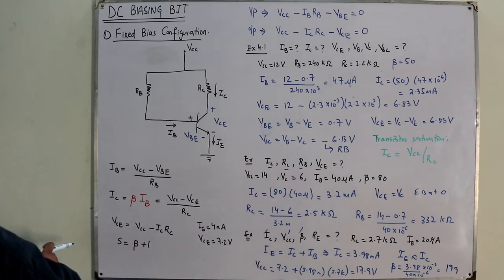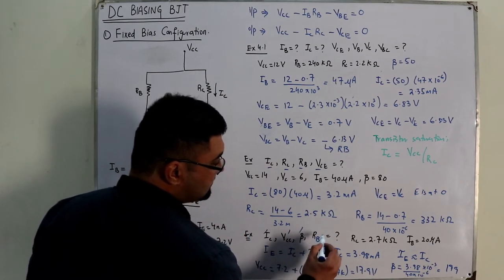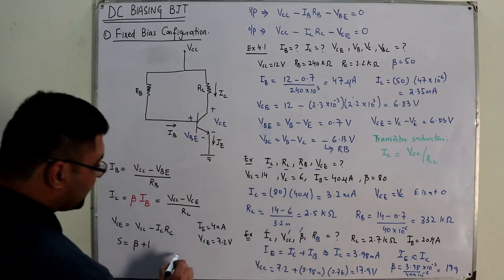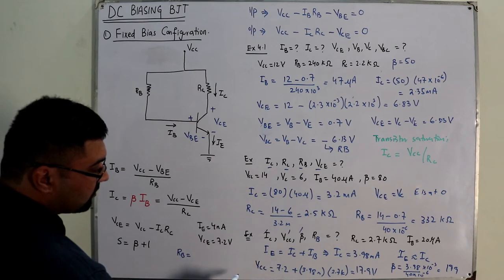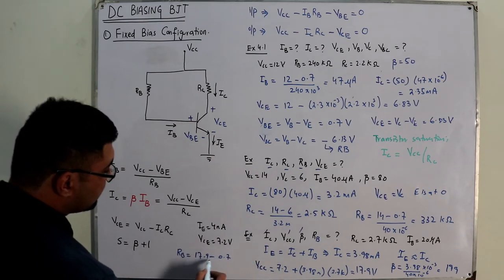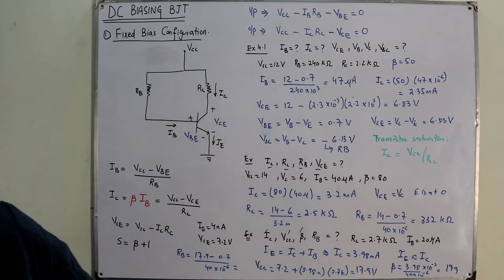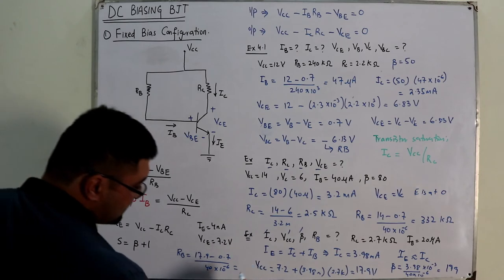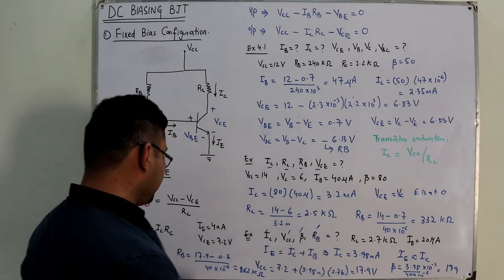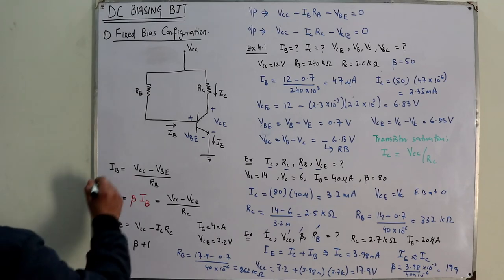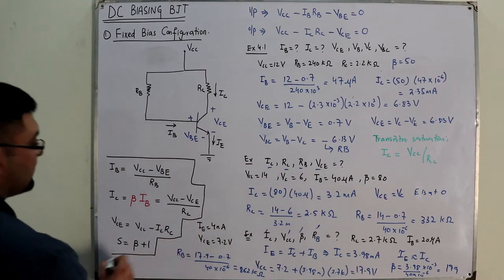Beta equals approximately 199. Note: there is no RE in the fixed bias configuration. What we're solving for is RB. RB equals (VCC minus VBE) divided by IB = (17.9 minus 0.7) divided by 40 micro-amperes, giving approximately 862 kilo-ohms. You can verify the calculations. The main tools are KVL to the input loop, KVL to the output loop, and the sensitivity factor.